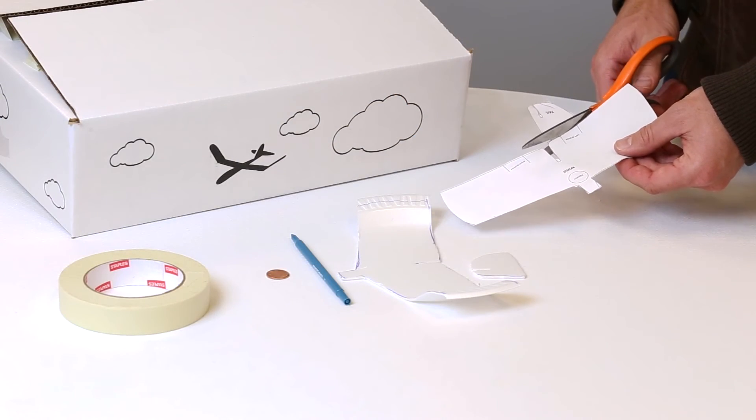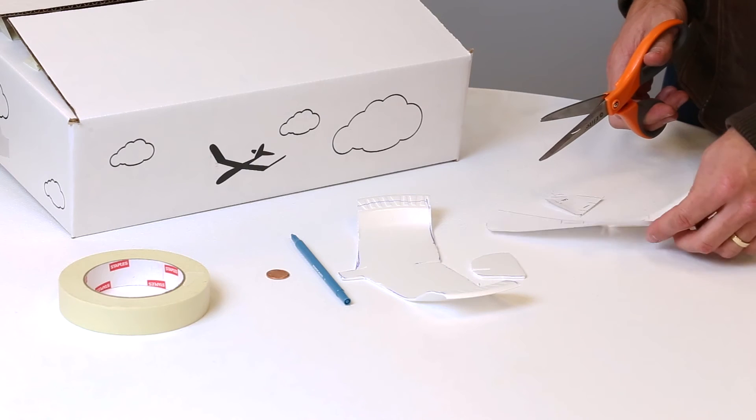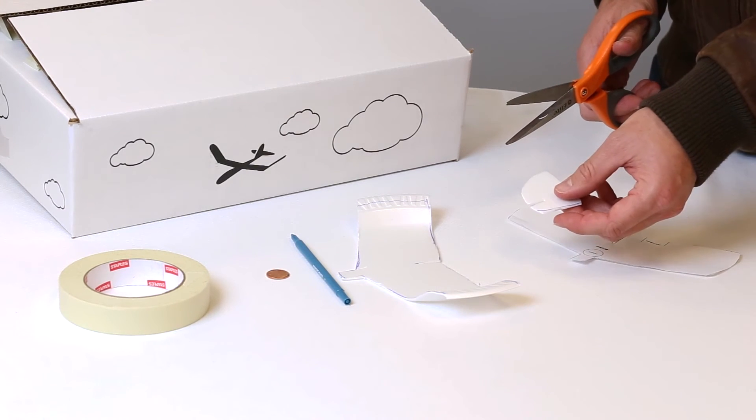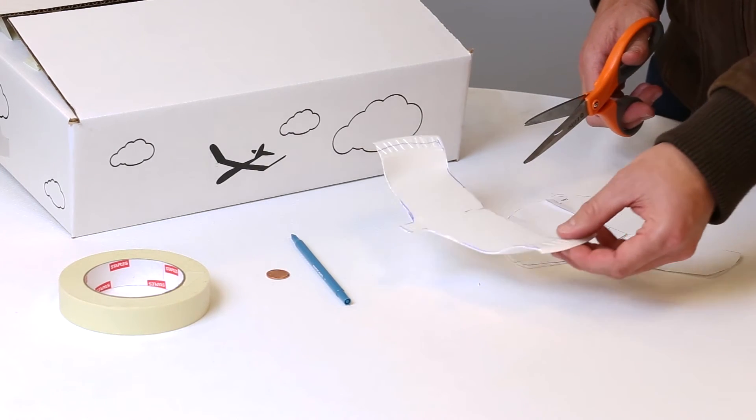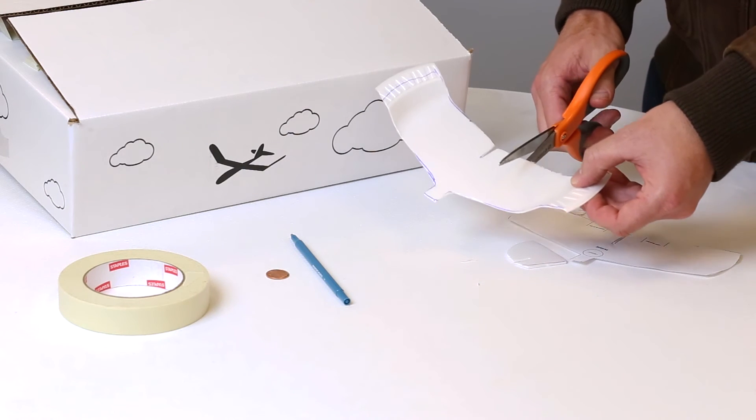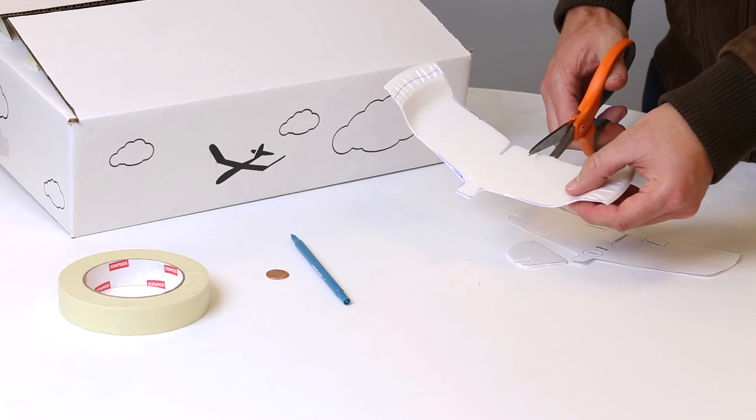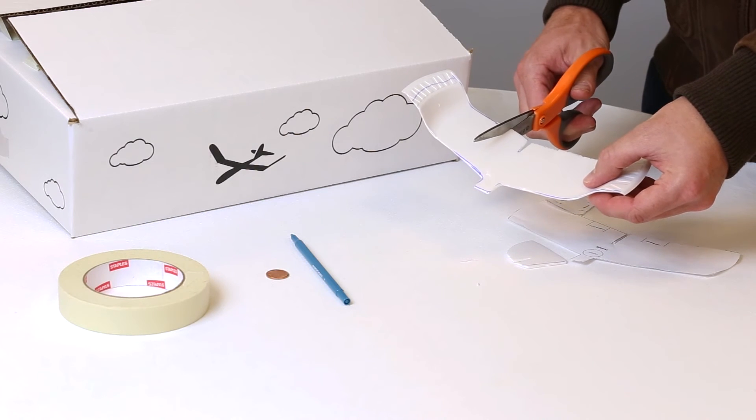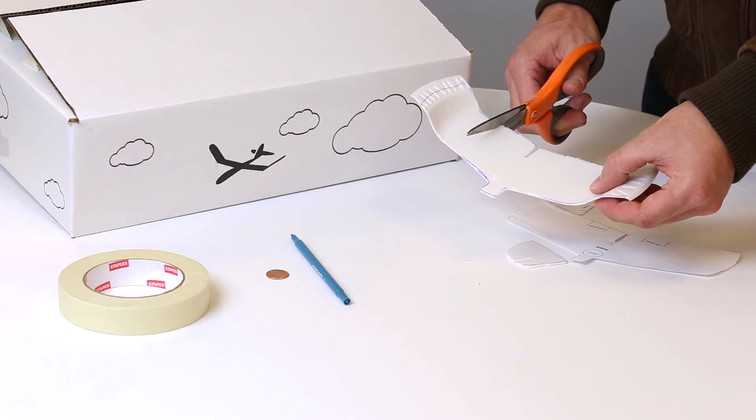You can use the tail pattern to mark the rudder lines so you know where to cut the rudder on the tail. Next you want to make cut slits for the left and right elevon on the back of the plane by following the lines that you drew earlier using your glider patterns. You'll use these to control the flight path of your glider.